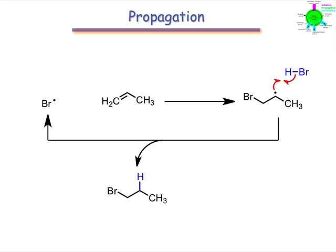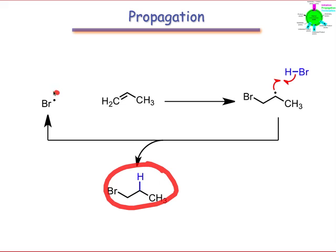Notice that this H to sigma star interaction accomplishes both of the goals of propagation. The product is formed and the propagating radical, Br dot, has been regenerated.